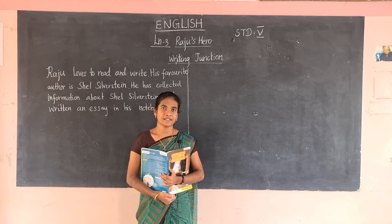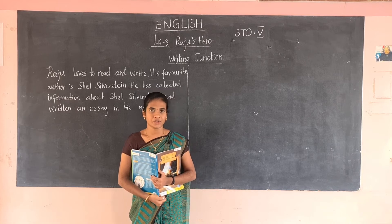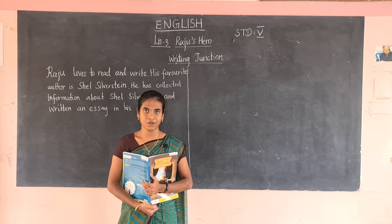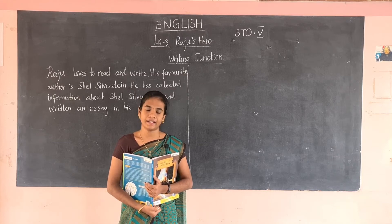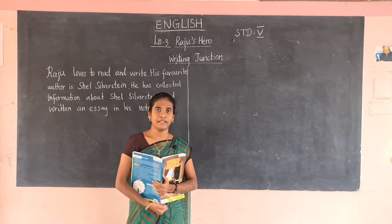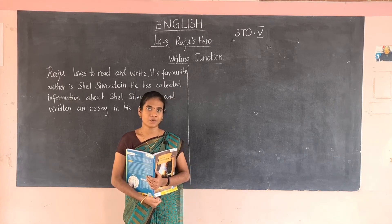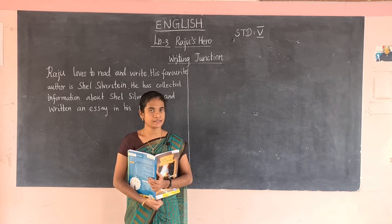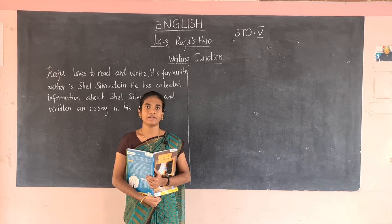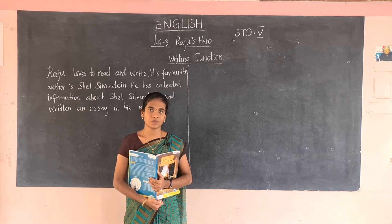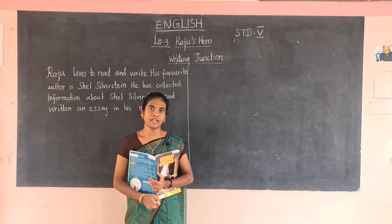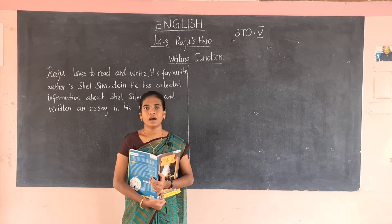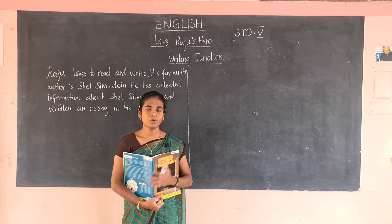Good morning students. In today's class we are going to see about a writing junction in Lesson 3, Raju's Hero. In English you would have come across various authors. Can you name some of the authors that you know? They are William Shakespeare, William Wordsworth, William Blake, and Jane Austen, then Charles Bernard Shaw. These are some of the authors.